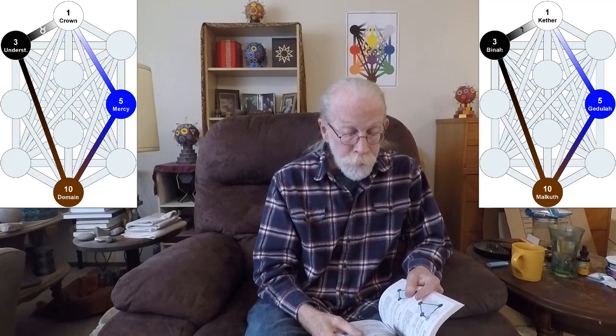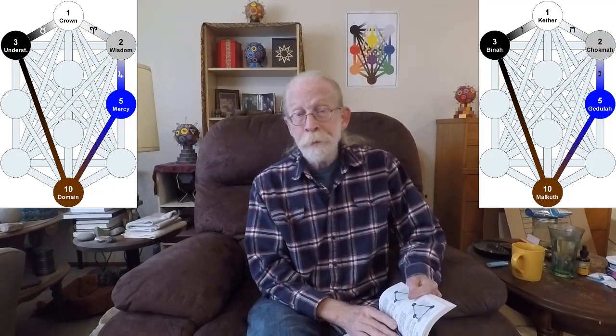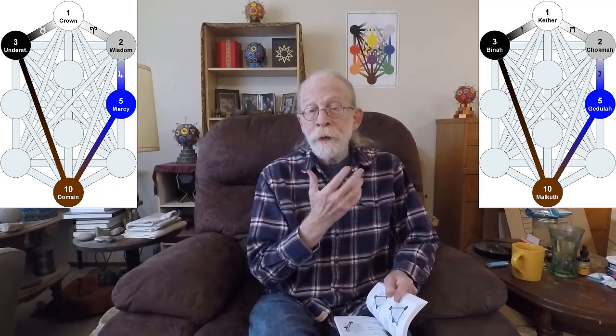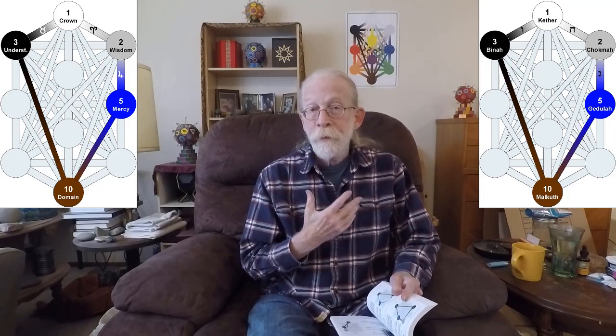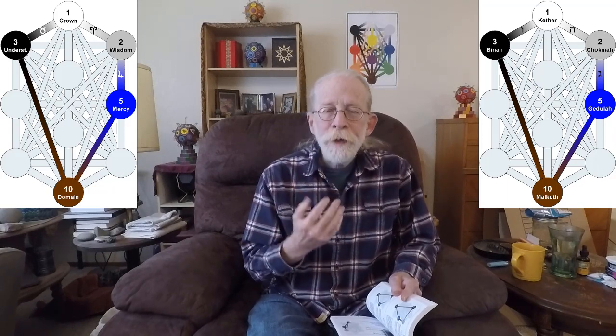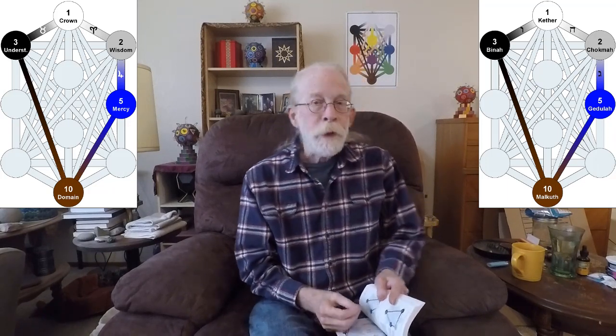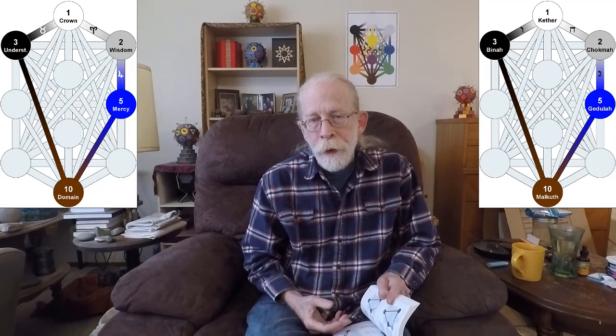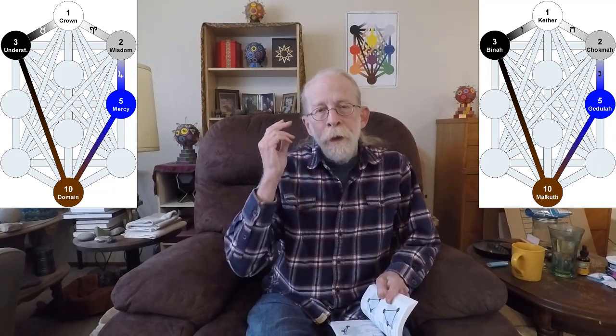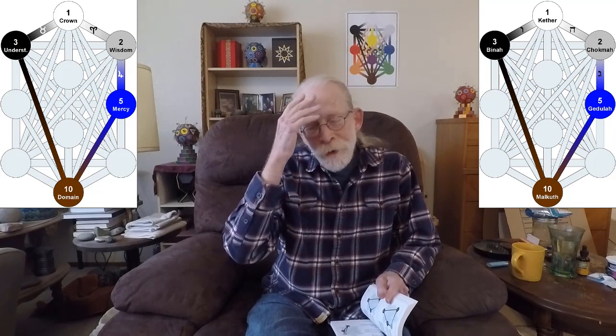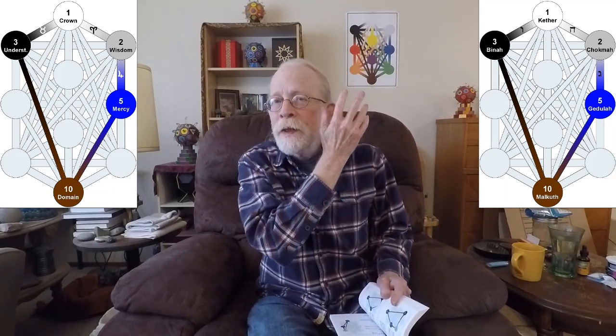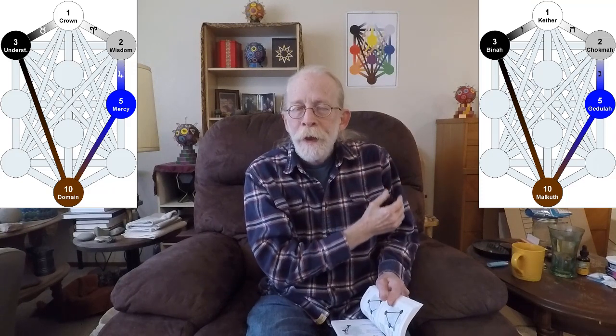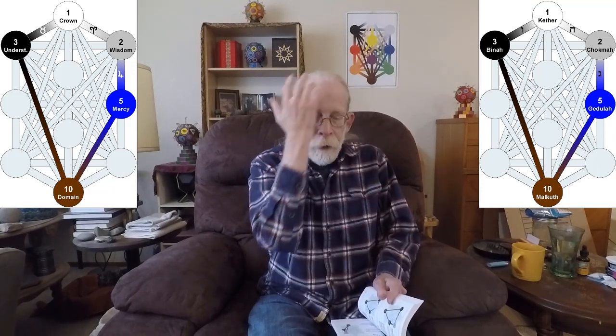Now the fourth gate is gate 117, and this is the pentangle. And again, it kind of combines the two previous gates, but it involves different paths. So we begin in Gedjula, take that hidden path down to Malkuth, hidden path up to Bina, Vav, Taurus, up to Kether, He, Aries, down to Chokmah, and Gimel, Jupiter, down to Gedjula, and then back around.